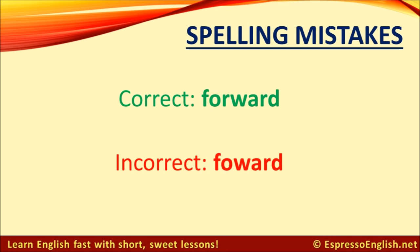Here's another one: the word 'forward.' Some people pronounce it 'forward' and some people pronounce it more like 'forward,' but when you're writing it, you need to include the R — F-O-R-W-A-R-D. When speaking fast, we sometimes say it as if there wasn't that first R, but you need to write it with both R's.